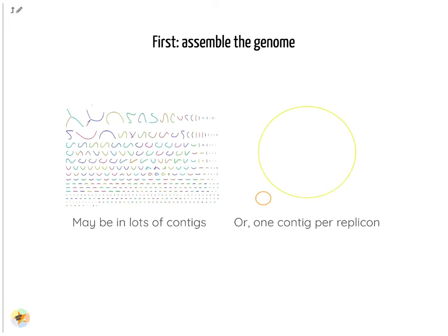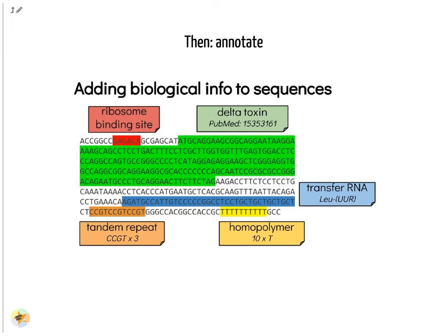Before annotating a genome, you need to assemble it. If you get a high-quality assembly, it will be easier to perform a good quality annotation. Once you have a good genome sequence, you can annotate it. In this example, there are genes coding for a delta toxin. There is a ribosome binding site shown in red, and the coding sequence of this gene is shown in green.